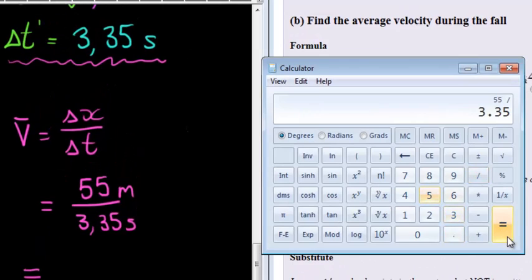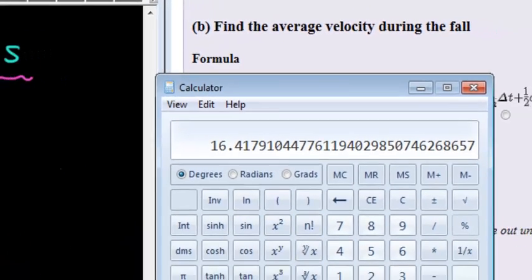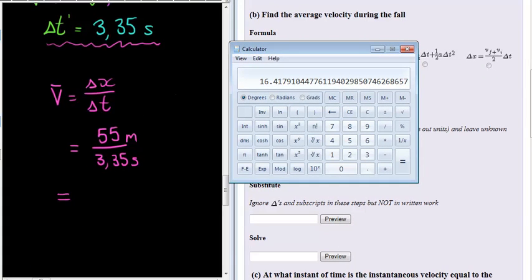In other words, 16.4, that 7 is going to make this a 2, 16.42 meters per second.